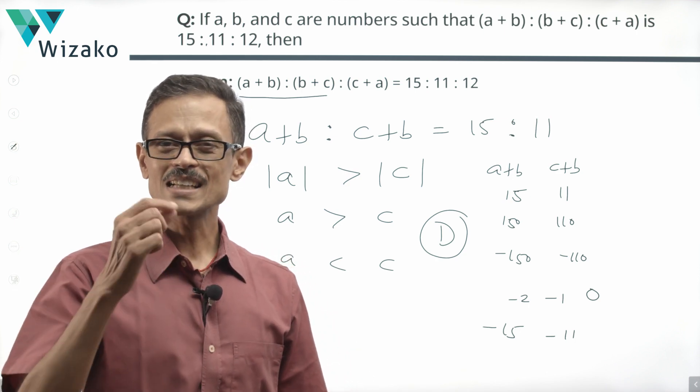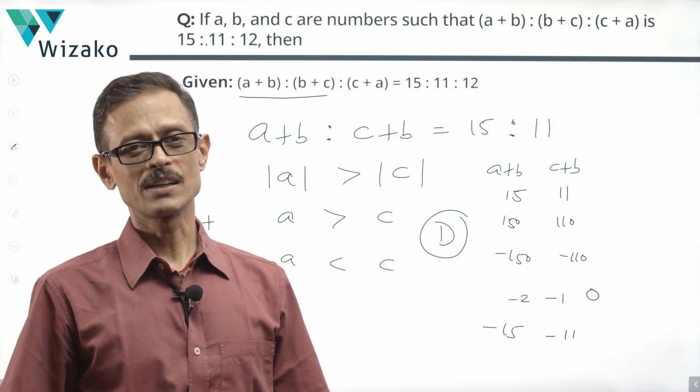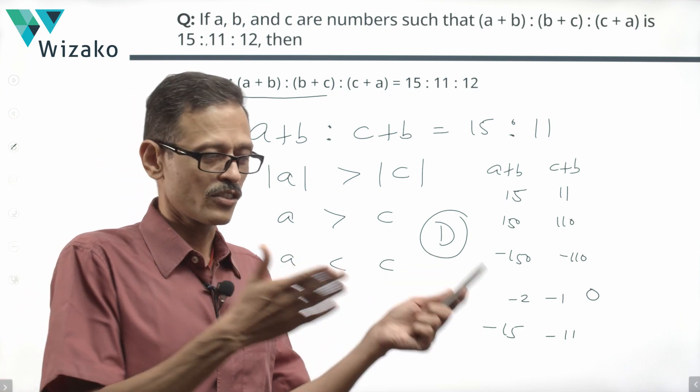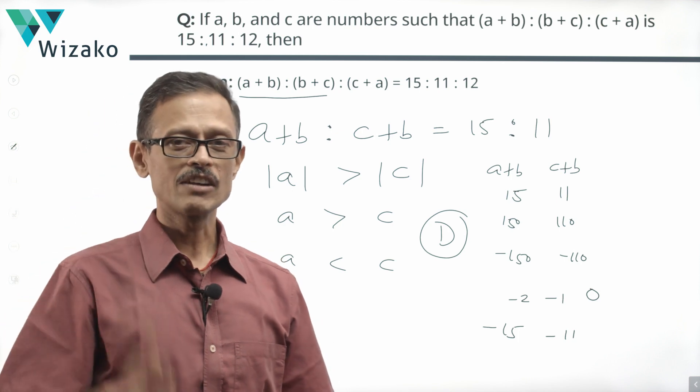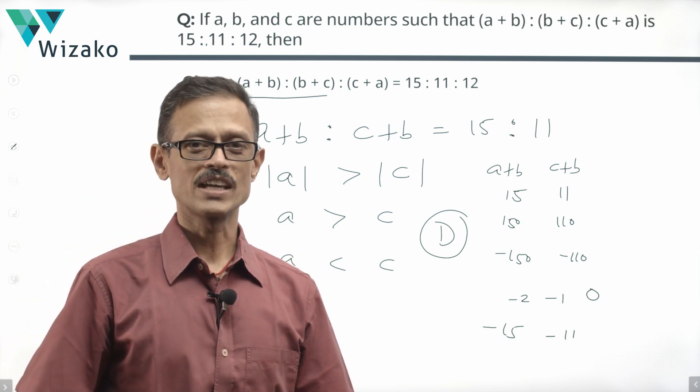So the easier the question is, there could be a beautifully laid out trap in it. So watch out. Say, should both be positive? Is there a possibility of both being negative? And then evaluate for both scenarios. Best wishes for your GRE prep.